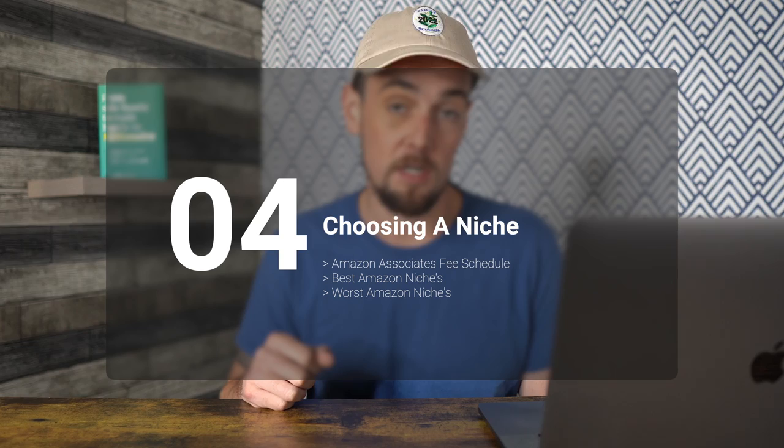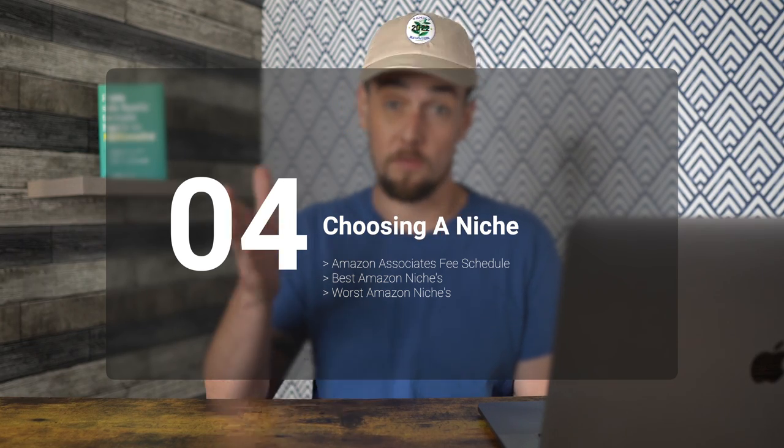The next topic is choosing a niche for your videos or articles. It's super important to think about this with Amazon, because there are some categories that have low commissions and you don't want to just pick something because it seems like it could make you money. With Amazon, it's not a fair and equal environment — some categories are really bad to get into. So we're going to open up the Amazon Associates fee schedule, take a look at those, and I'm going to tell you some of what I think are the best categories as well as the categories to avoid.